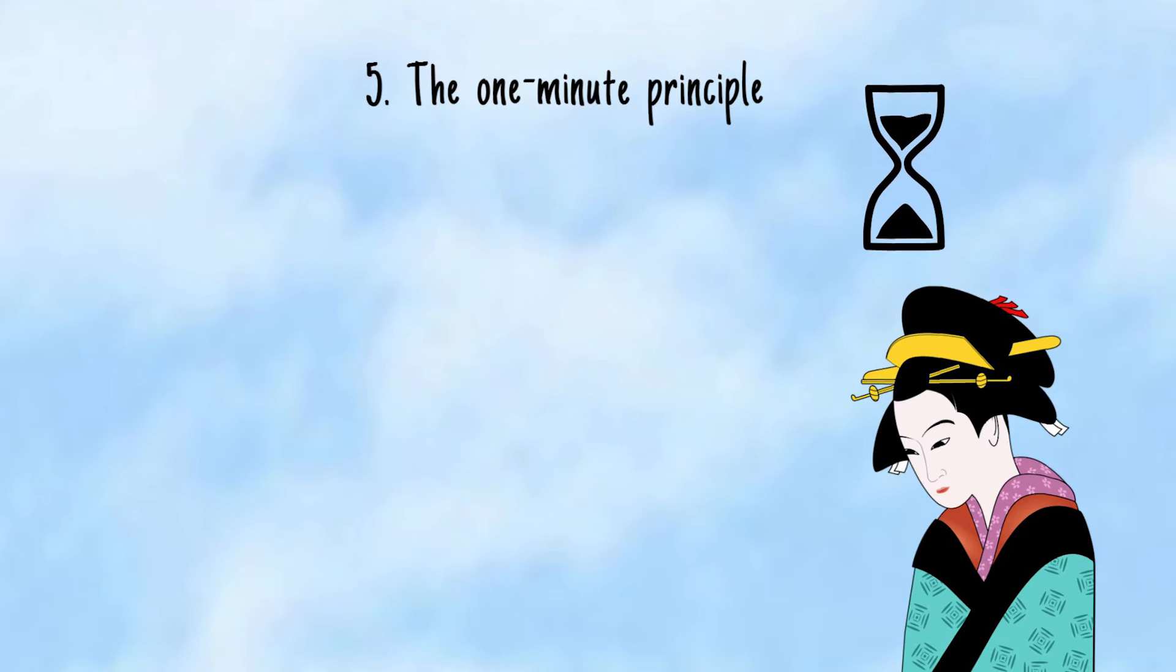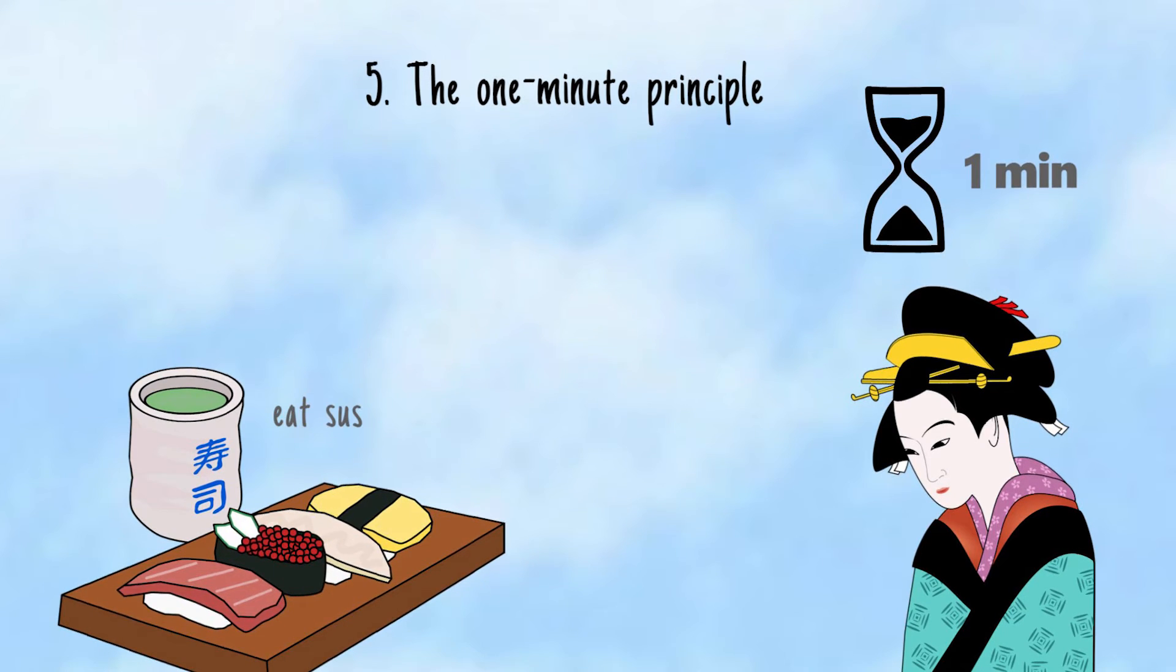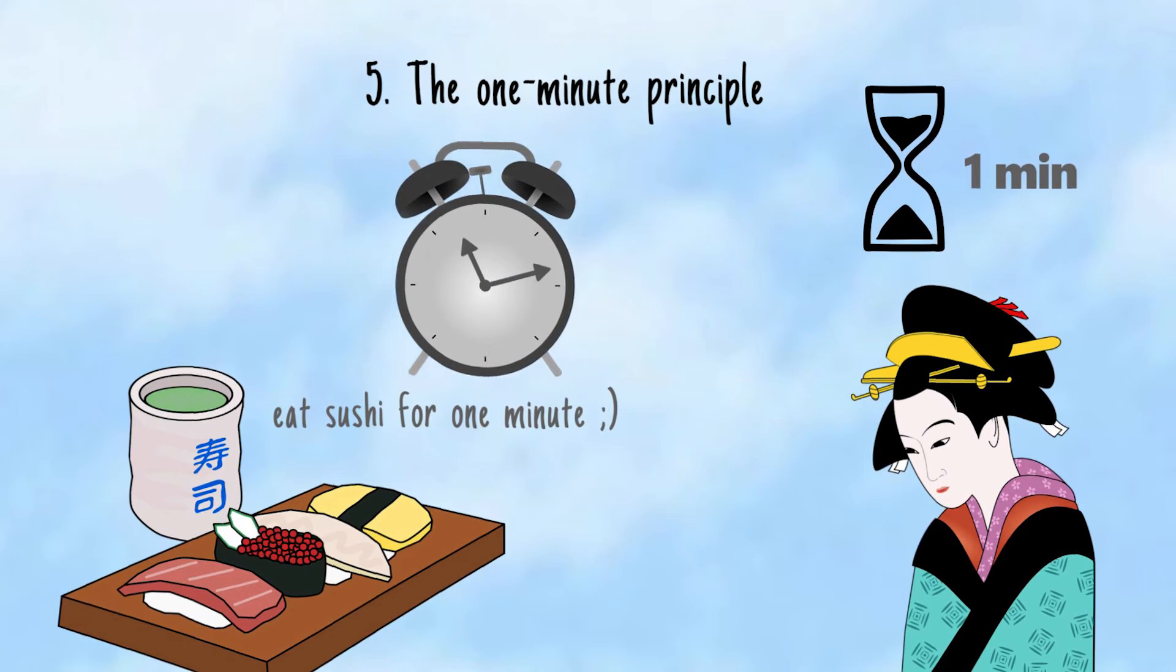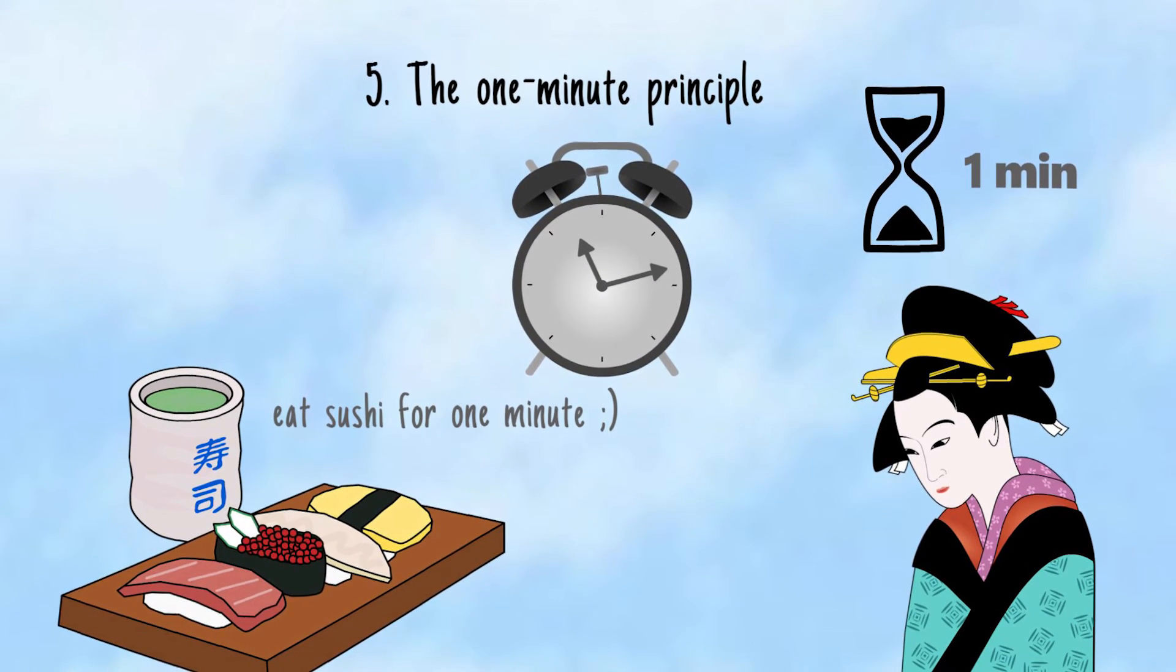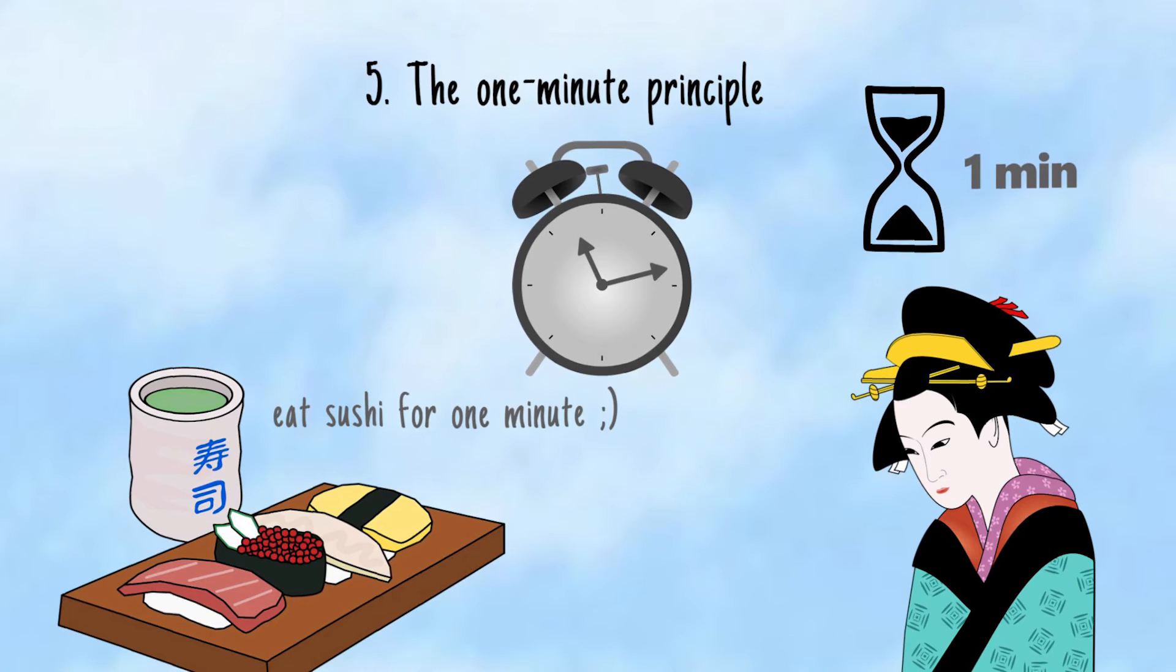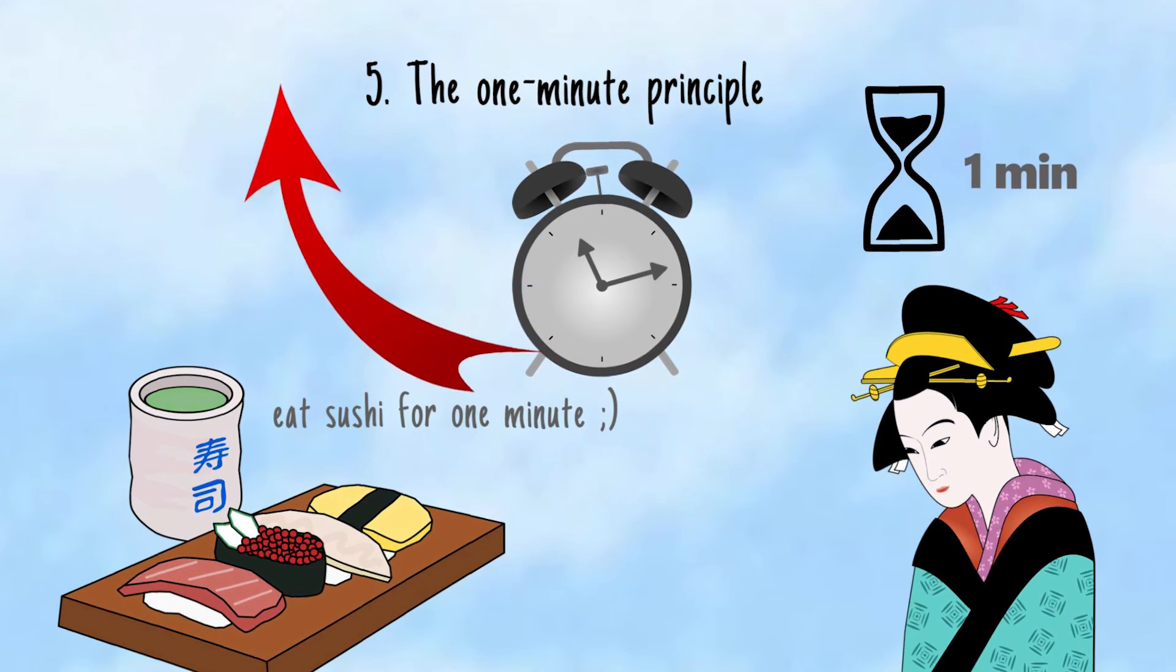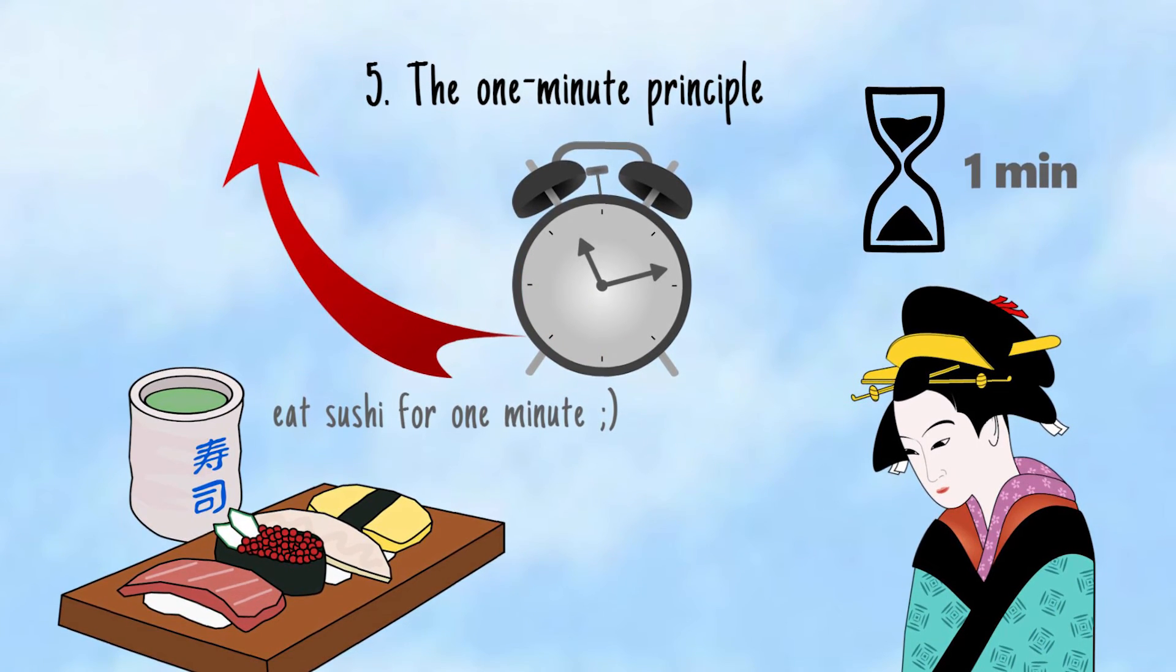The fifth thing is actually a Japanese technique that I find very helpful. It's called the one-minute principle. When you want to start doing something, if you can't find the motivation, do it for only one minute every day at the same time. Even if you're super lazy, I'm sure you can do something for one minute. Do push-ups for one minute, read for one minute, write for one minute or whatever you want to do. Many times you will continue for more than one minute because all you needed is that little push.